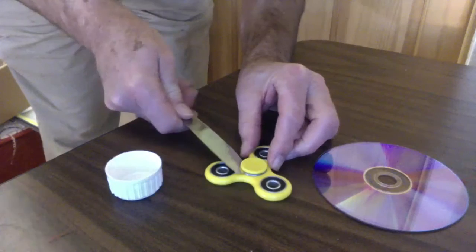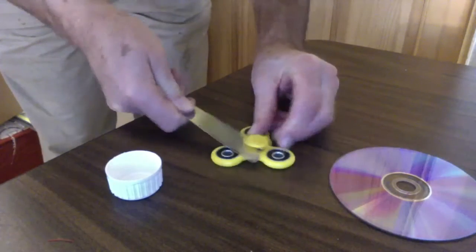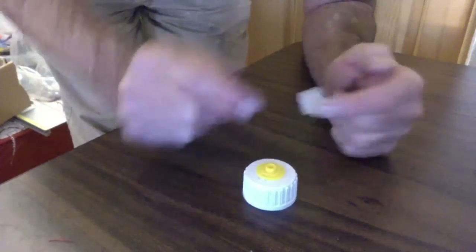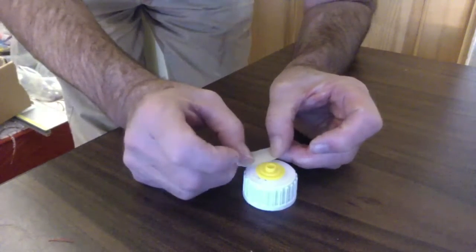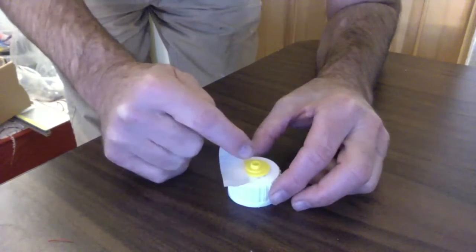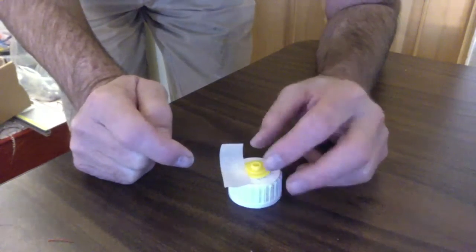And then apply the tape to the edge. You can't put the tape close to the center or else it's going to interfere with the bearings.